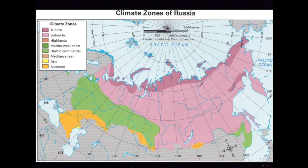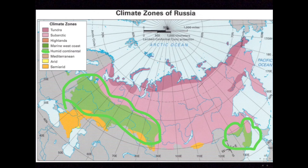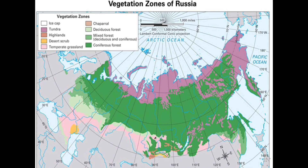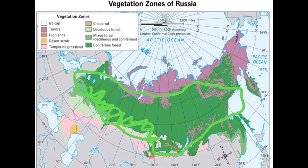Moving on to mid-latitude climates. One area is your humid continental zone, seen here in the North European Plain, a little part of Siberia, and close to China on the southeastern part of Russia. Most of Russia's North European Plain falls in the humid continental zone, and there are also small parts of Siberia in this zone. Your humid continental zone is going to have a coniferous taiga, as well as the taiga belt extending into these areas.